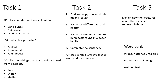Here's your task. Choose your task and complete it. Task 1: questions and options are given — you have to tick the right answer. Task 2: questions are given — write the answers. Task 3: explain how the creatures adapt themselves to each beach habitat. The word bank is provided to help you form sentences.